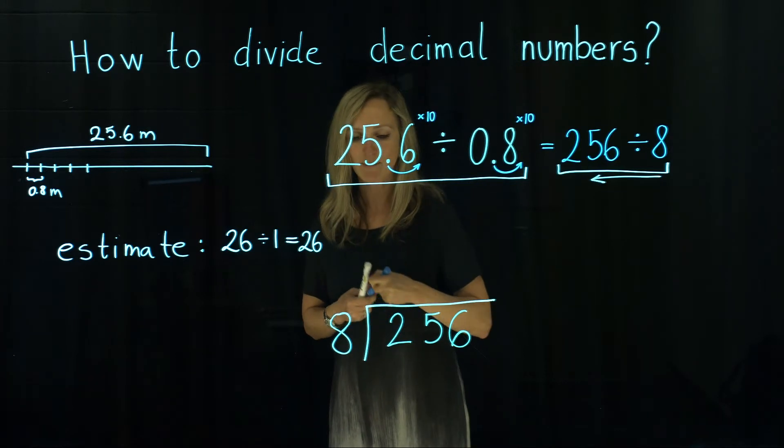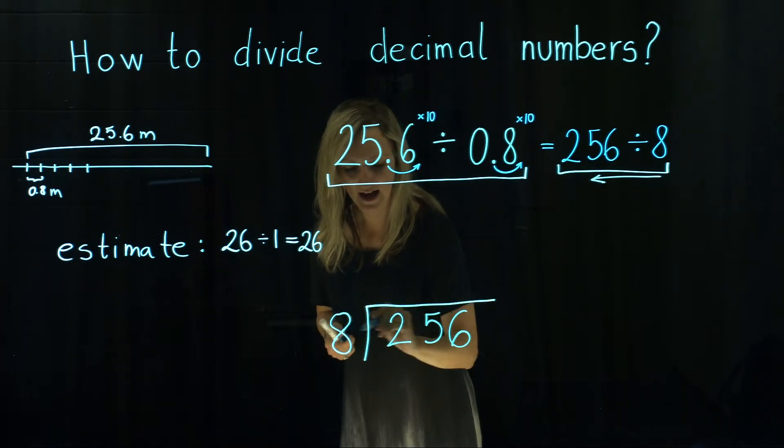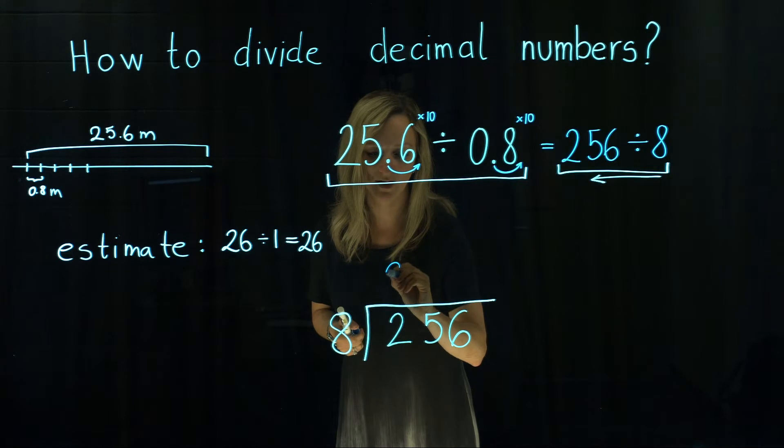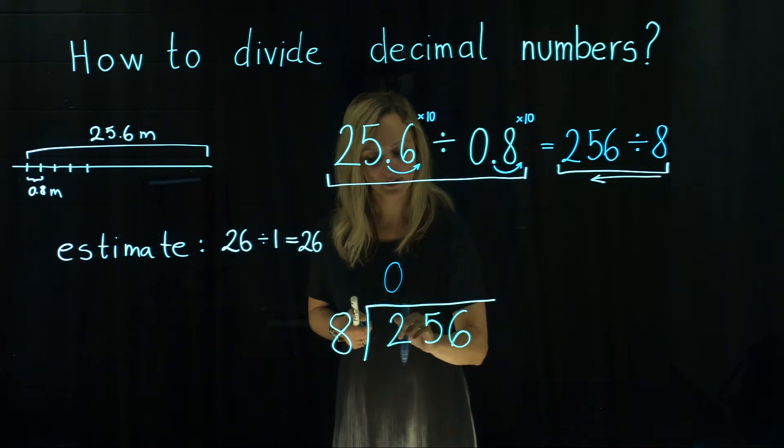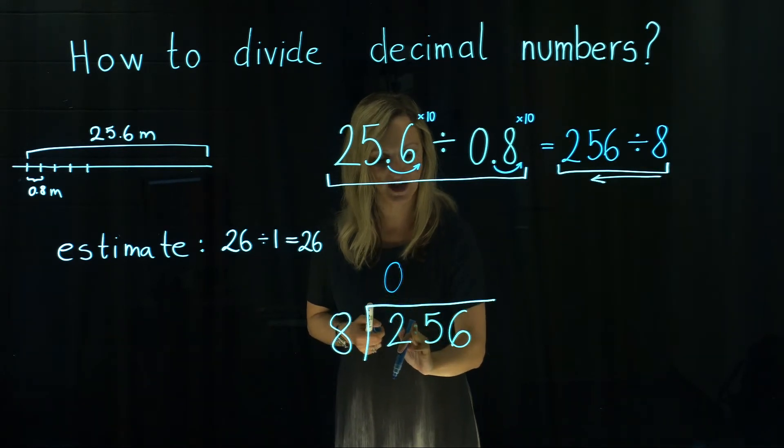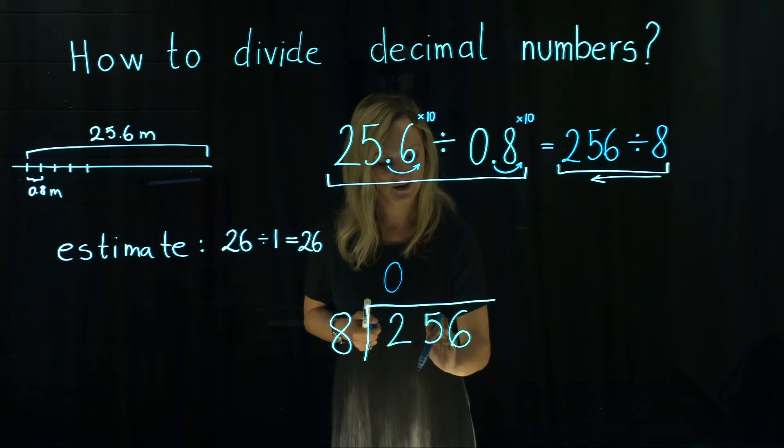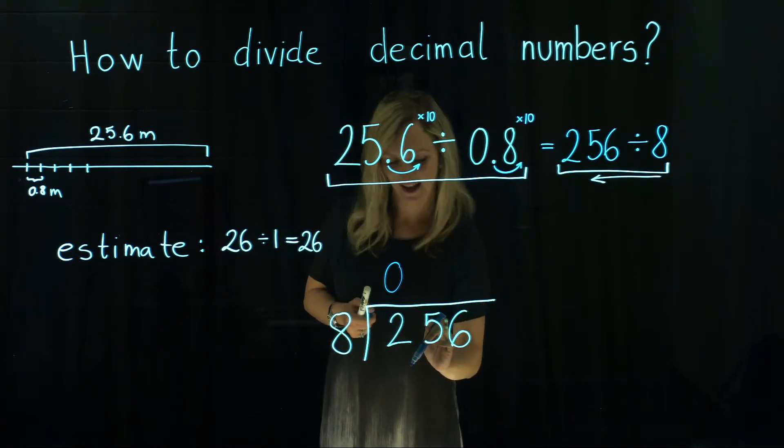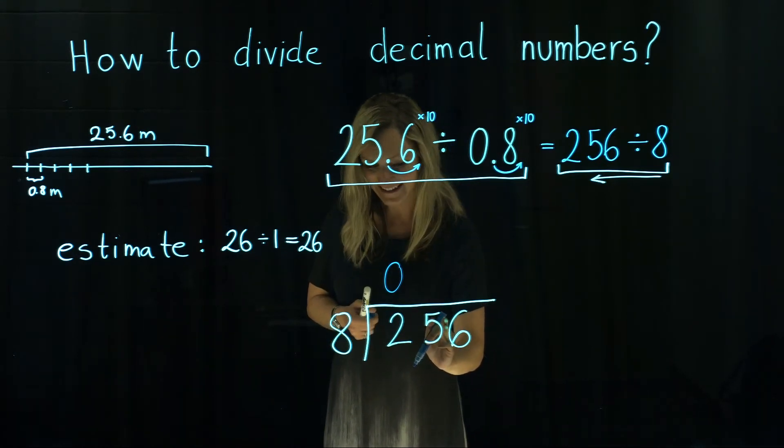We say how many times do we get 8 into 2? We don't. So we might write 0 here on the top. But of course we don't have just number 2. We have 256. So let's continue then with the next digit. How many times 8 goes into 25?